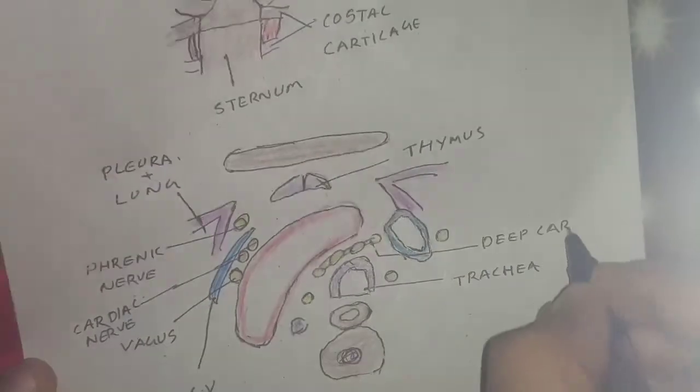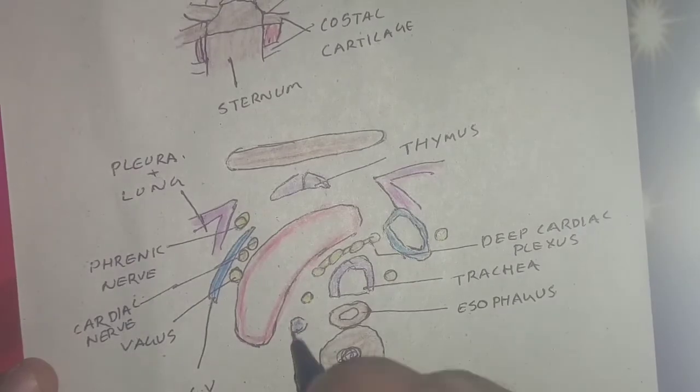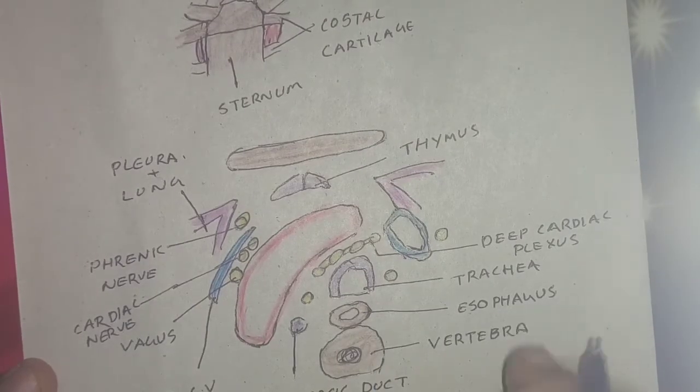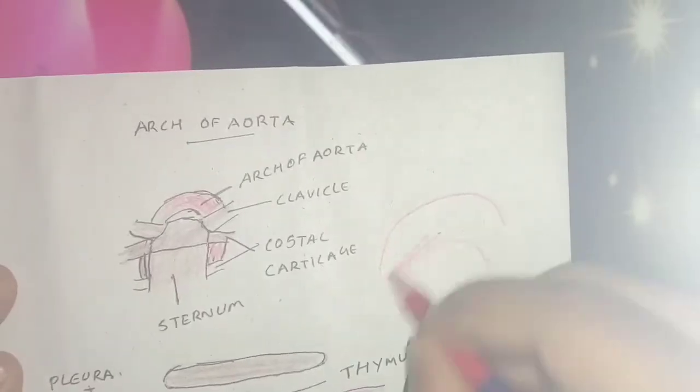Posteriorly, it is deep cardiac plexus, trachea, esophagus, thoracic duct, and vertebral column.